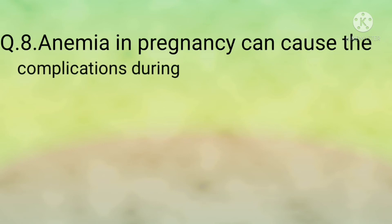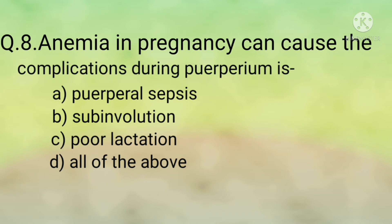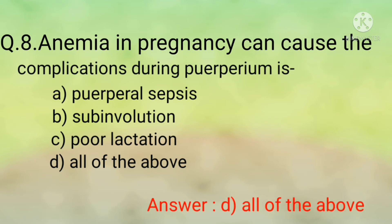Question number eight: Anemia in pregnancy can cause which complications during the puerperium? Options are: option A, puerperal sepsis; option B, sub-involution; option C, poor lactation; option D, all of the above. The correct option is option D, all of the above. The puerperium begins after delivery and lasts about six weeks. Puerperal sepsis means infection of the genital tract; sub-involution means the uterus does not return to its normal size or cannot contract properly; poor lactation means low milk supply.